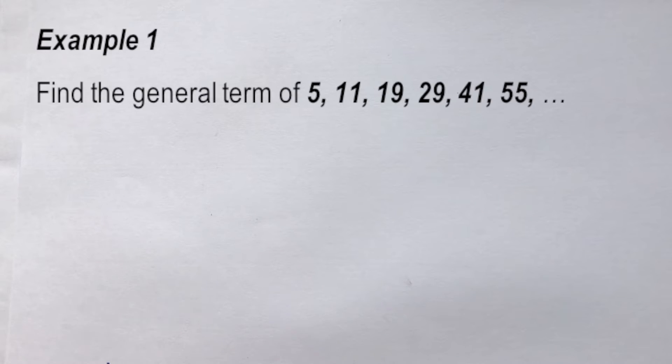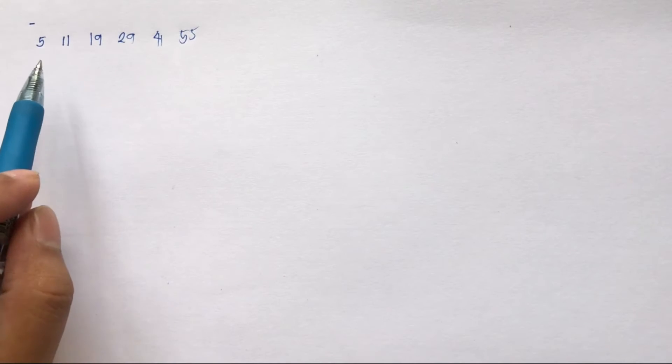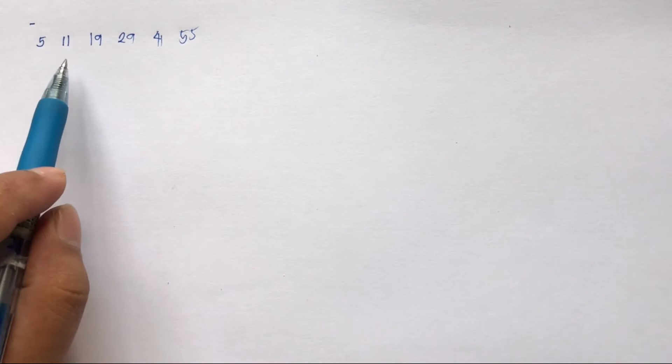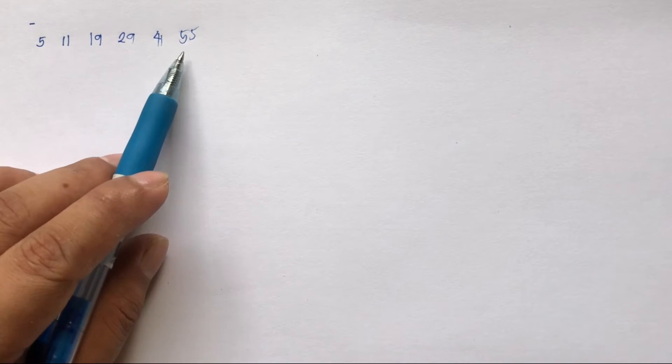Let's have our first example in finding the general term of a second degree or quadratic sequence. Find the general term of the sequence: 5, 11, 19, 29, 41, 55.